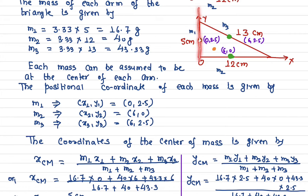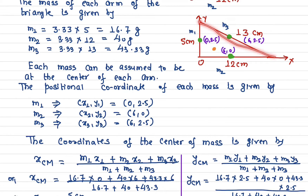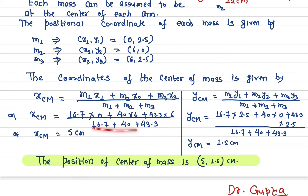m2 is 40 grams for the 12 centimeter side, and x2 is 6 centimeters. For m3, the mass is 43.3 grams and its x-location is also 6 centimeters. The total mass is 100 grams. Doing the math gives an x center of mass of 5 centimeters.